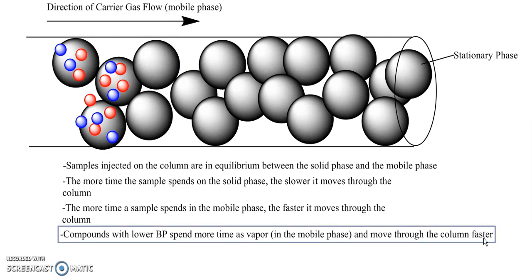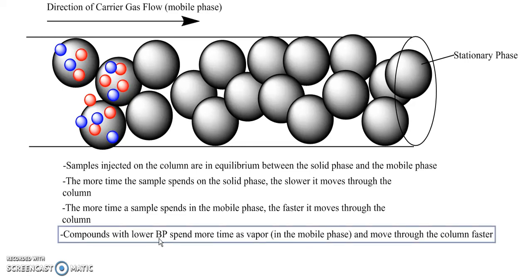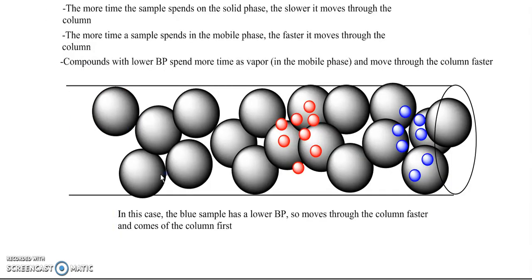A compound with a lower boiling point will spend more time as a vapor and will be in the mobile phase more, and it'll move through the column faster. So compounds with a lower boiling point come off the column first; with a higher boiling point come off the column last.